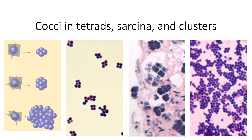Tetrads are basically groupings of four cocci, and that's what you can see on the second picture. Meanwhile, sarcina or octets are groups of eight cocci that form a cube — that is the third picture. Meanwhile, your clusters are grape-like bunches of cocci, and that is what you see on the rightmost picture.